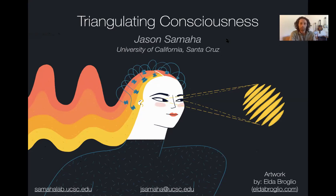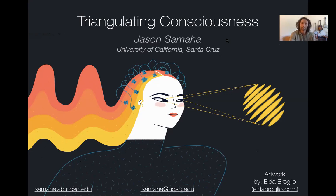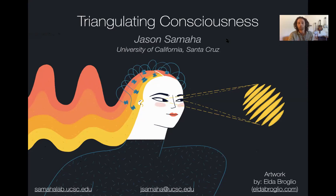The basic idea behind triangulation is that any single method, any single experiment, or any single analysis by itself is going to have some kind of confound, especially when trying to isolate neural correlates of consciousness. Therefore the approach we're taking is to apply different methods that all control for one confound the other method has, with the hope that the true neural correlates of consciousness should show up across all of those different approaches.